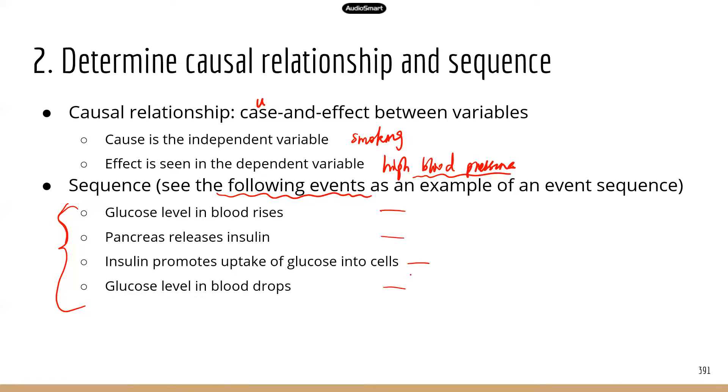I have some examples here. So in this example, you have four different events happening, and you need to know the correct order or the correct sequence for these events. This is about insulin and glucose level. Now we know that insulin regulates glucose level in the blood.